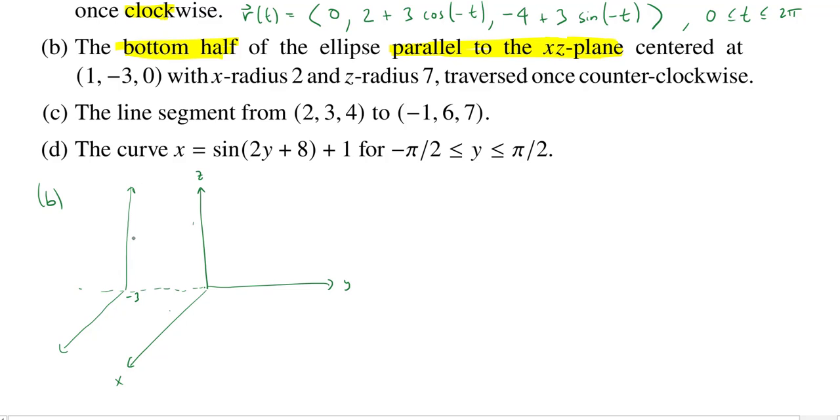Now the Z coordinate of the center is actually at 0. And the X coordinate is at 1. So X coordinate maybe could come out like this. So there would be Z, 0, Y, -3, and X, 1. And it's just the bottom half of the ellipse.